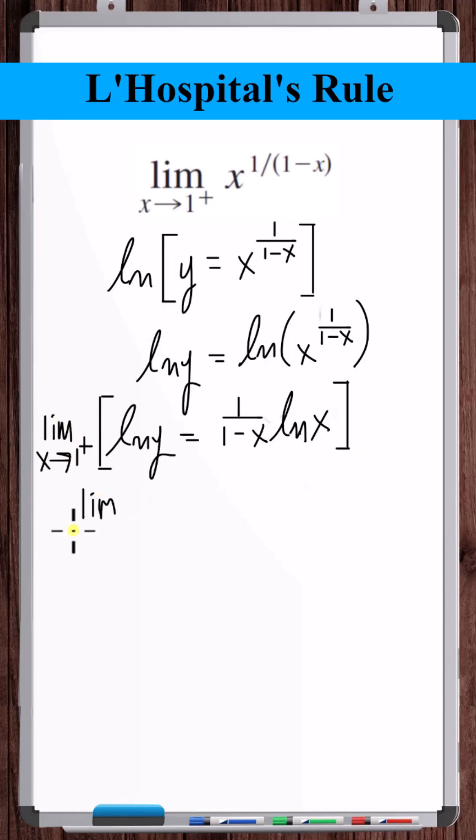Now let's take the limit as x approaches 1 from the right of this entire equation. Plugging in 1, this goes to 1 over infinity. Natural log of 1 goes to 0. Infinity times 0 is an indeterminate form.